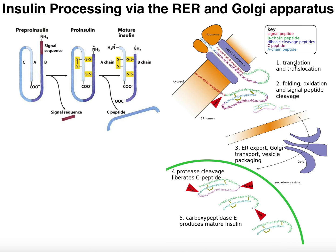Once this immature pre-proinsulin is inside the rough ER lumen, we're going to have folding, oxidation, and signal peptide cleavage. The signal peptide is a region of the protein that signals it needs to go into the rough ER lumen. Any protein that needs to enter the rough ER lumen when initially translated will always have this signal sequence, and since it's never part of the mature protein, it has to be cleaved off. That cleavage is catalyzed by a protease called Sec11. Oxidation refers to the disulfide bridges that must form from free cysteine thiols — a process that occurs in the rough ER lumen.